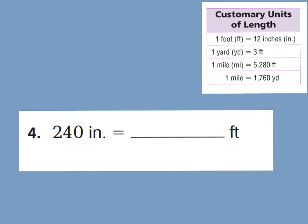Now for question number four, it's a little different than the last two. We're looking for 240 inches equals how many feet. Now which is bigger — feet or inches? We know feet are bigger. So if you're going to go from a small unit of measurement, which is inches, to something larger, feet are larger than inches, then you're going to have to divide, because you're going to have a smaller amount of feet than the number of inches.